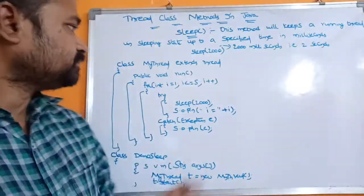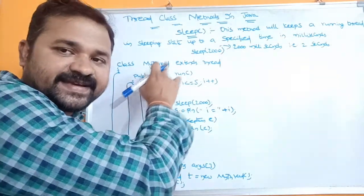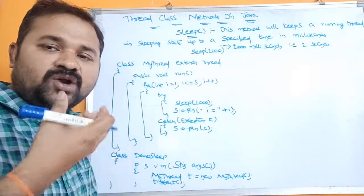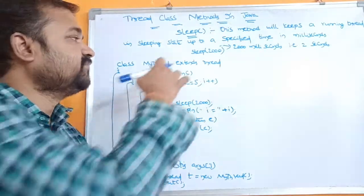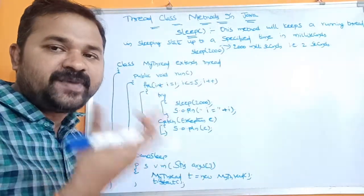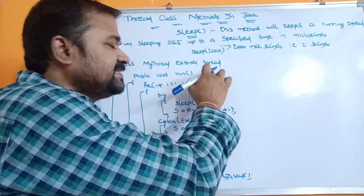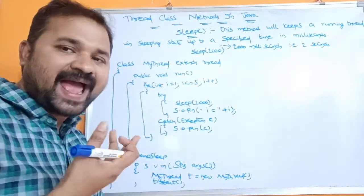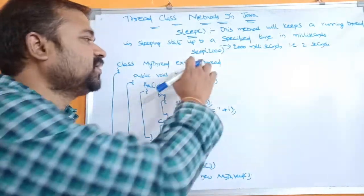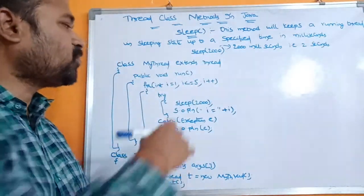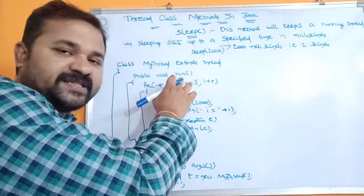Now let's look at this program. The class name is MyThread, which extends Thread. To implement a thread, we declare a class that extends the Thread class or by implementing the Runnable interface. Here we are extending the Thread class, which is available in the lang package — the default package — so we can use the Thread class without importing it.